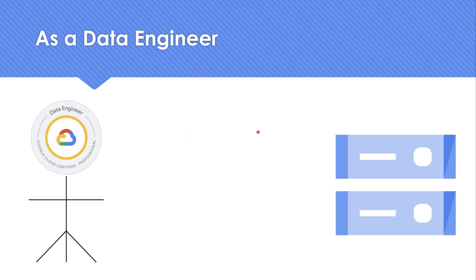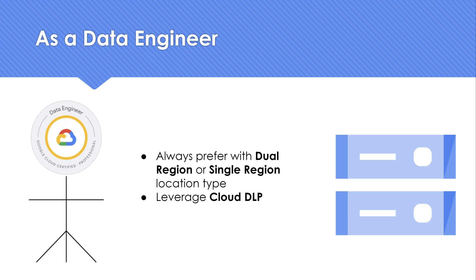As a data engineer, what are the best practices which you should consider? Make sure whenever you create a Google Cloud Storage bucket, the location type is either a dual region — something like Mumbai, Delhi, Singapore, Taiwan — or it could be Melbourne and Sydney. Those are what you should prefer. The reason is the data is not leaving that specific country, so it's going to be compliant.